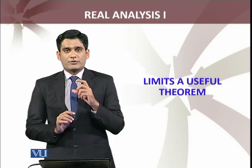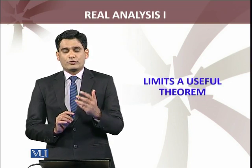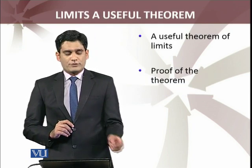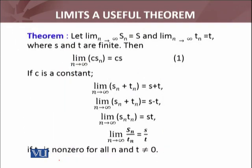This is a very important result which we discuss today, and we will apply it in forthcoming modules. A useful theorem of limits: if you have a sequence Sn which is convergent and converges to some finite number S, and another sequence Tn which is also convergent and converges to T, where S and T are finite numbers, and C is any constant or real number...